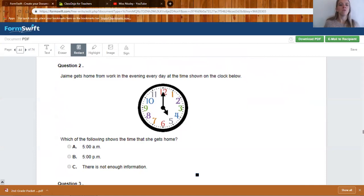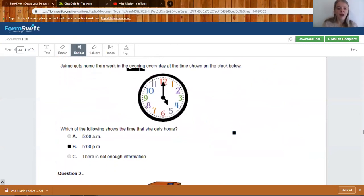Question two. Jamie gets home from work in the evening every day at the time shown on the clock. Which of the following shows the time that she gets home? 5 a.m., 5 p.m., or there is not enough information? Your answer should have been B, 5 p.m. Think about it. I know on the clock that you can't tell if it's 5 a.m. or 5 p.m., but Jamie gets home from work in the evening every day. Remember when we look at evening or afternoon? We know that it is p.m., not in the morning. 5 p.m.